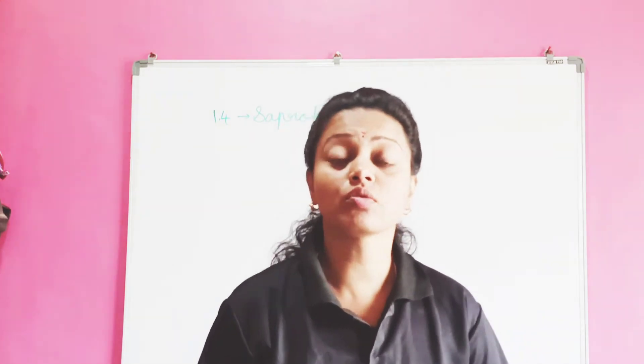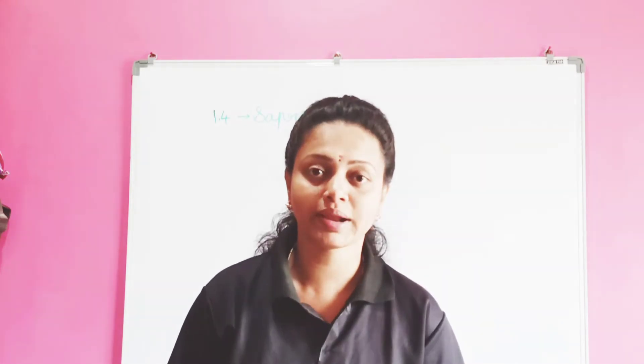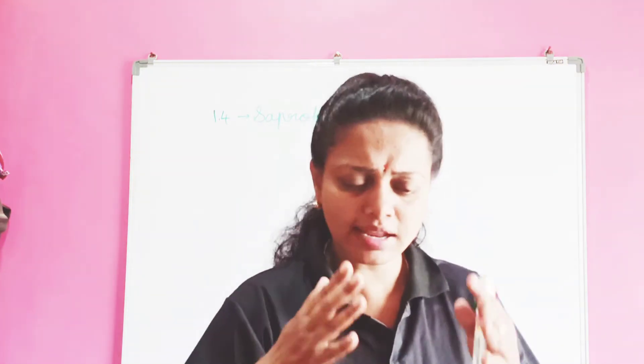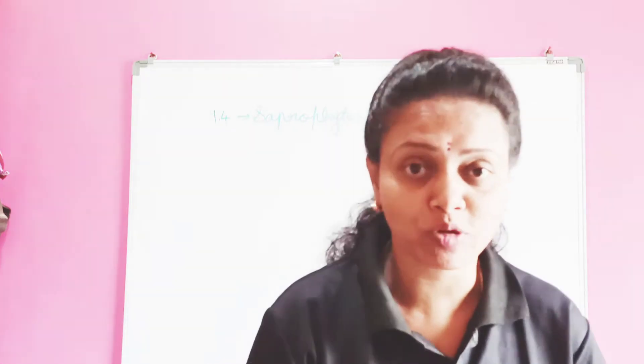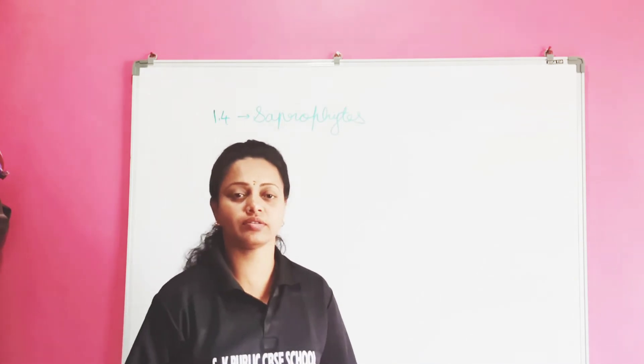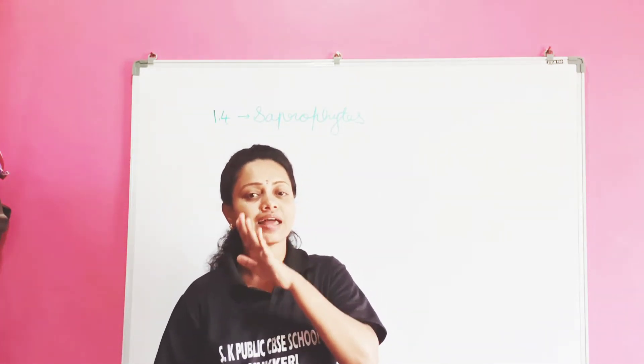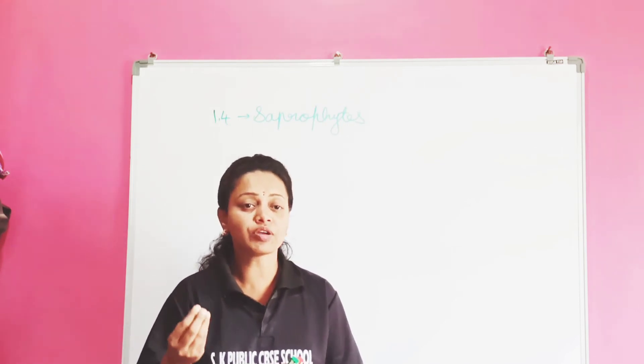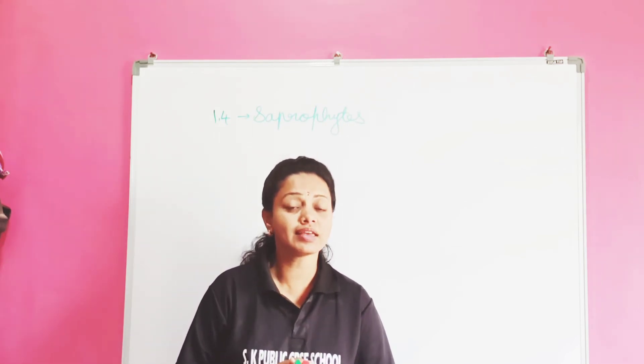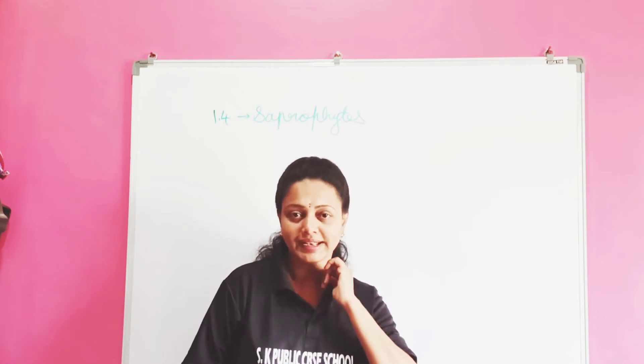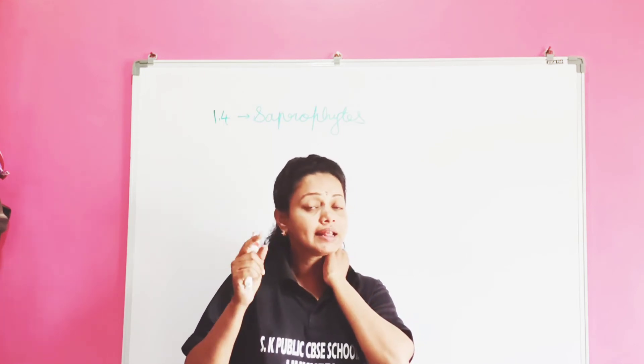Dear students, today you are going to do one activity. Take a slice of bread, sprinkle water on that. You are going to spoil only one slice of bread because it is needed to understand saprophytes. Take a slice of bread, sprinkle water on it or make it wet or moist, and keep that in a warm and moist place for two to three days until fluffy patches appear on them. You can see in your textbook. Keep it until it becomes paste.